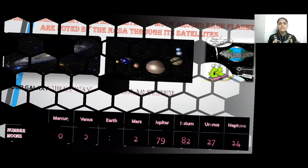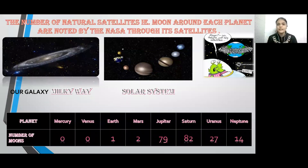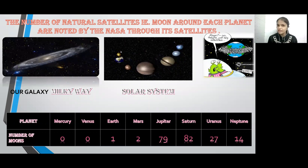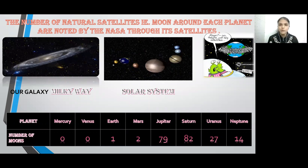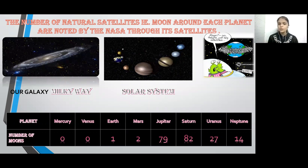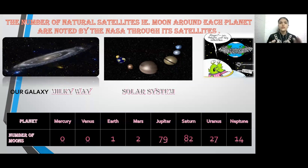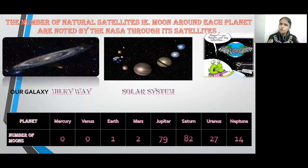Now let's see the total number of moons around each planet as discovered. Mercury and Venus have zero moons discovered. Earth has one moon — that is its natural satellite. Mars has two moons. Jupiter has 79 moons. Saturn has 82 moons. Uranus has 27 moons, and Neptune has 14 moons discovered so far. Now let's move on to orbits — how satellites revolve around planets in a fixed orbit and why they don't fall off.